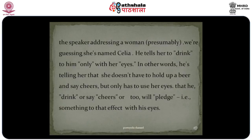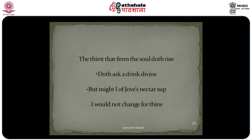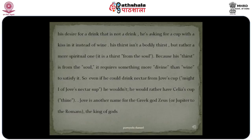The speaker is addressing a woman named Celia. He tells her to drink to him only with her eyes — in other words, she doesn't have to hold up a glass and say cheers, but only has to use her eyes. He will pledge or drink or say cheers with his eyes in return. 'The thirst that from the soul doth rise doth ask a drink divine' — his desire is not for a drink but for a kiss in the cup instead of wine. His thirst isn't a bodily thirst but rather a spiritual one — a thirst from the soul, requiring something more divine than wine to satisfy it.